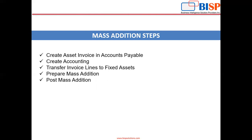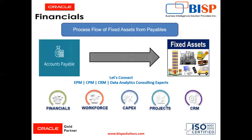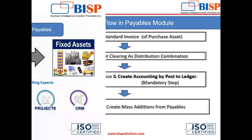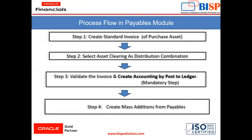These are the following steps that you need to follow for creating mass addition in Oracle Fusion asset: create asset invoice in accounts payable, then create accounting for that invoice, then transfer invoice lines to fixed assets, then prepare mass addition, then perform post mass addition. In the mass addition process, we will see how to convert the invoice into fixed asset lines.